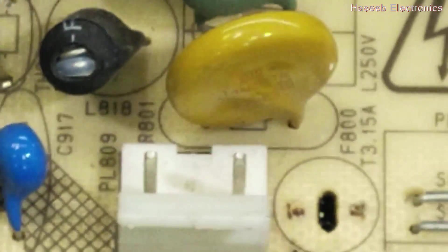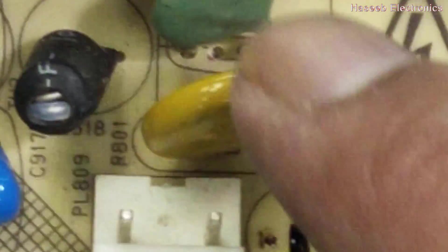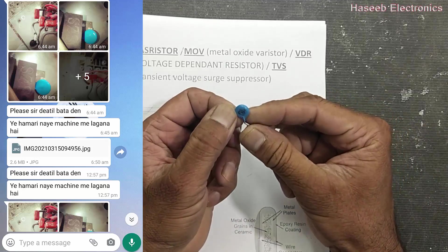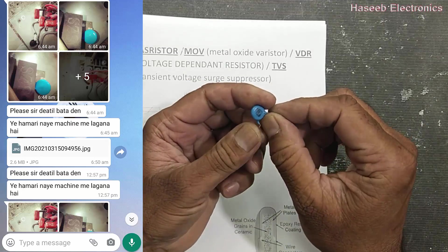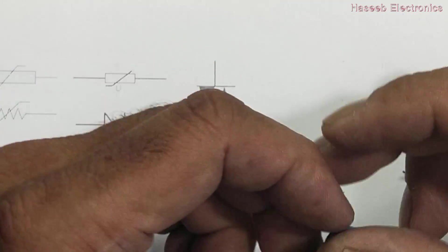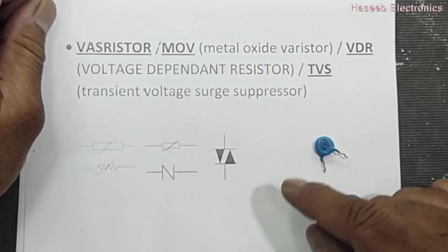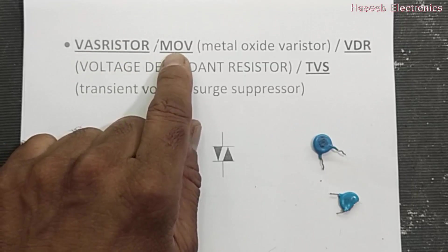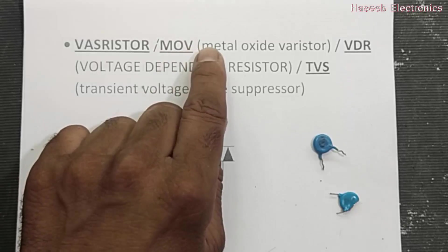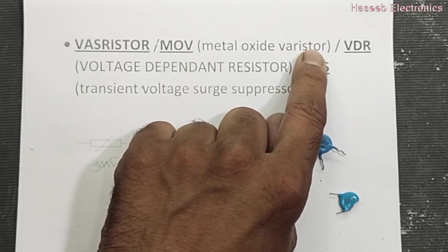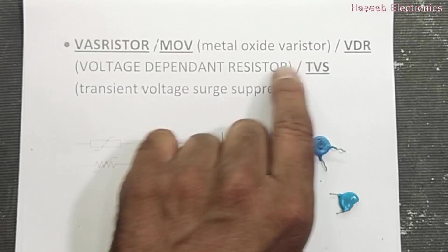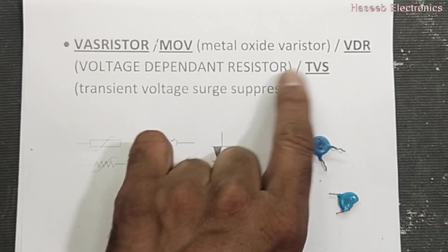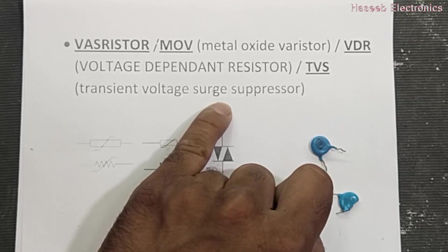In this power supply it is mentioned ZD1; it is at the input filter circuit. We also have a yellow-shaped component here — what is this component? It is basically a question from one of my viewers from Grace Electronics. So let's discuss: it is a varistor — voltage dependent resistor — or you can say it is a MOV, metal oxide varistor, VDR, or it is named TVS — transient voltage surge suppressor.